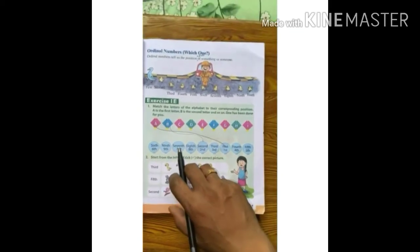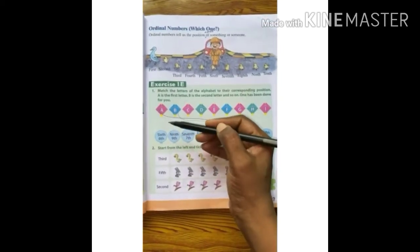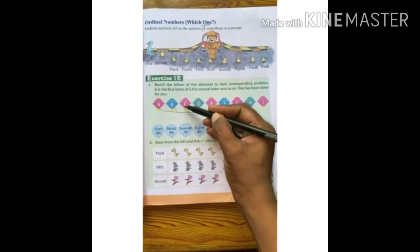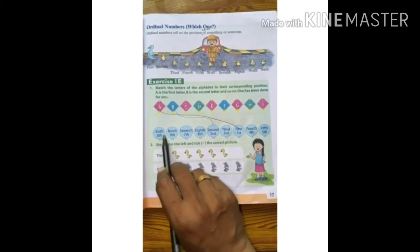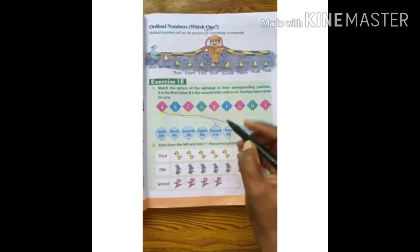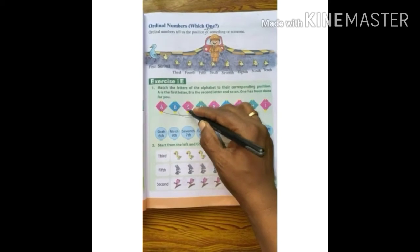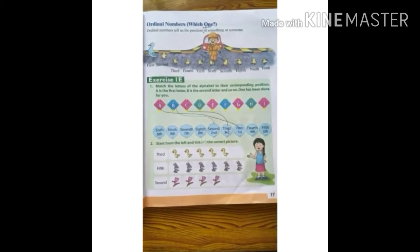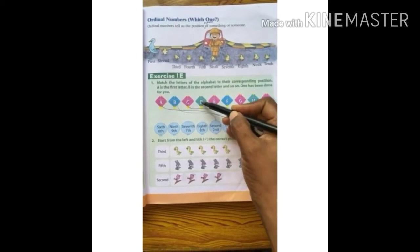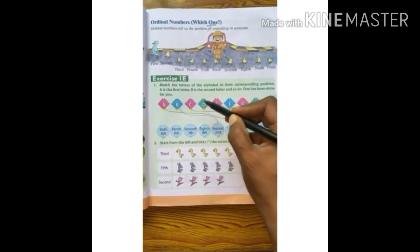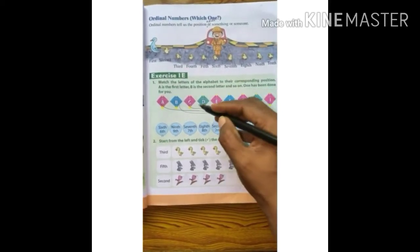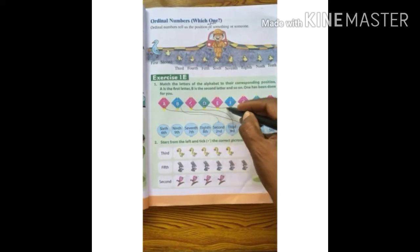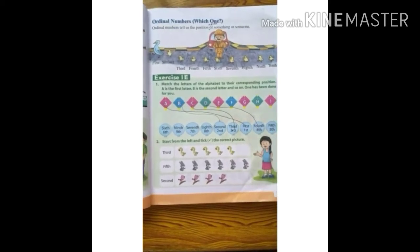B is already done for you. Next is C — C is the 3rd letter, so we will draw a line to match C to 3rd. Done. Now D — D is in the 4th position, so we will draw a line to match to the 4th ordinal number position. Done.